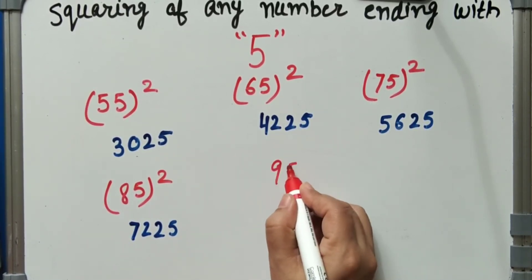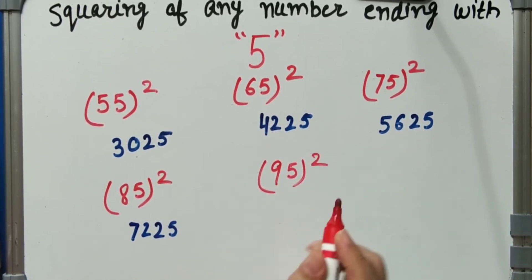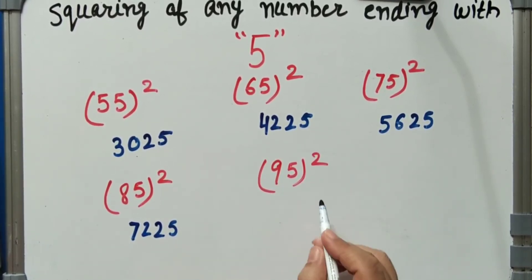95 square: that is 25, 9 into 10, that is 90, 25.